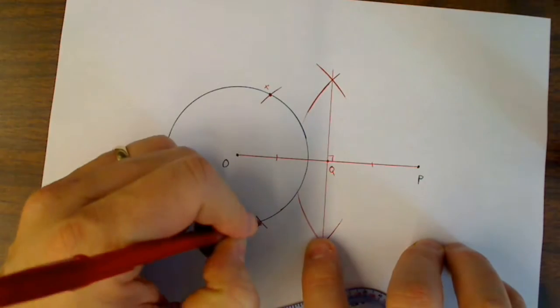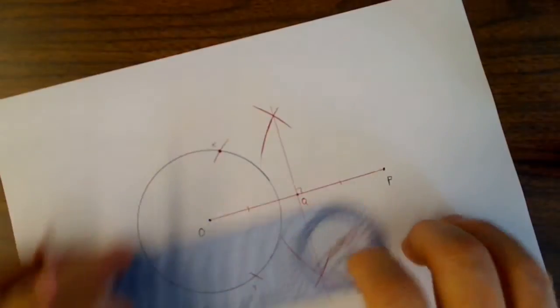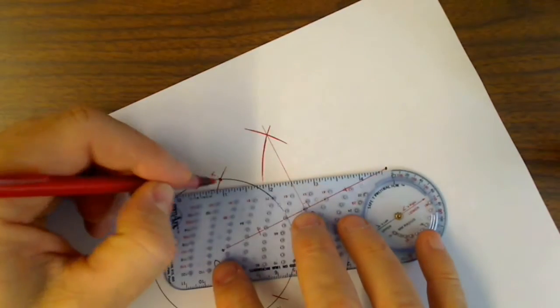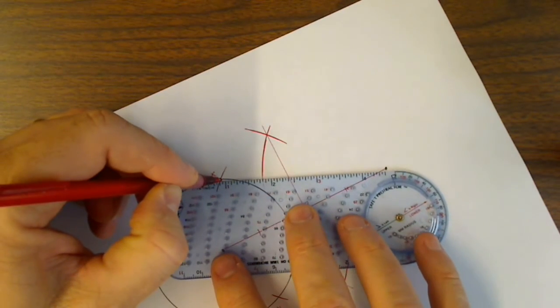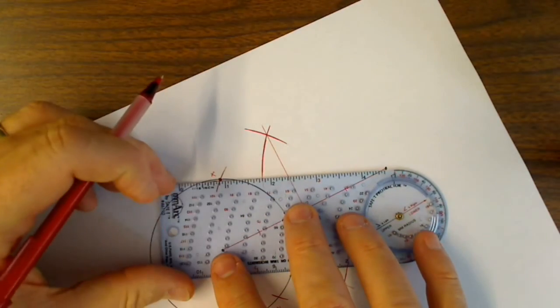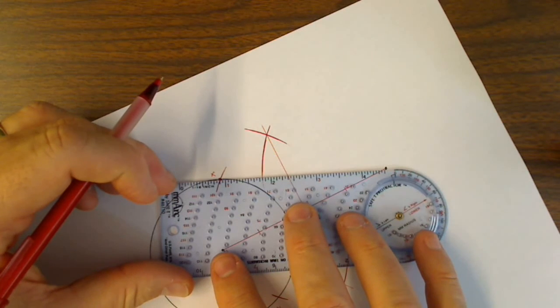I'll call that X and I'll call this one Y down here. It turns out that at this point, if I connect point P to point X, that will be the tangent.